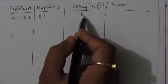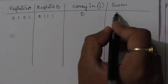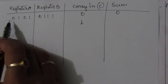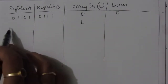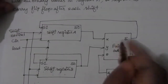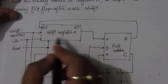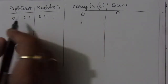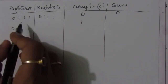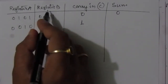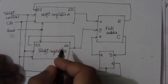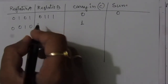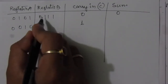For the first clock cycle: 1 + 1 + 0 (carry in is 0) gives sum = 0 and carry out = 1. This sum (0) feeds into the MSB of register A, so register A becomes 0010. For register B, the serial output feeds back to the left, so register B becomes 0011 after the shift.